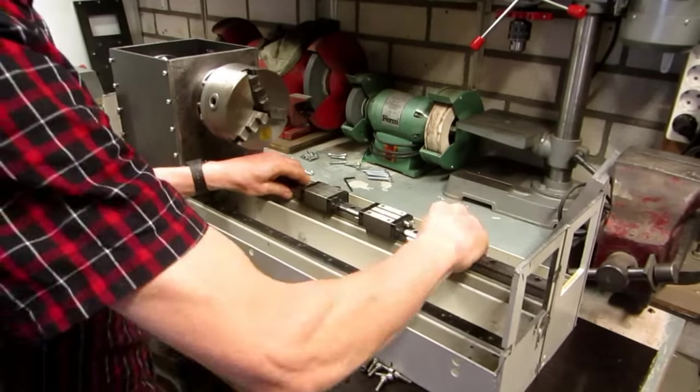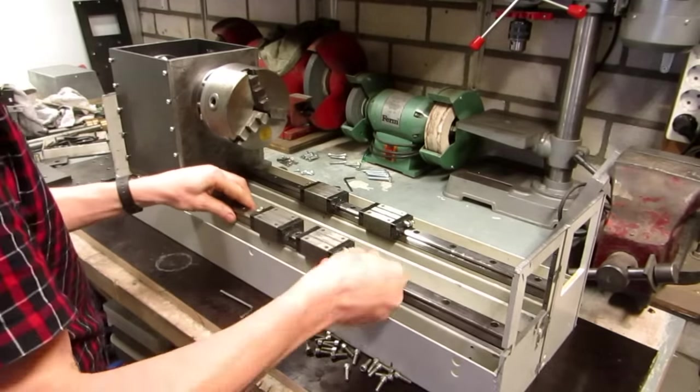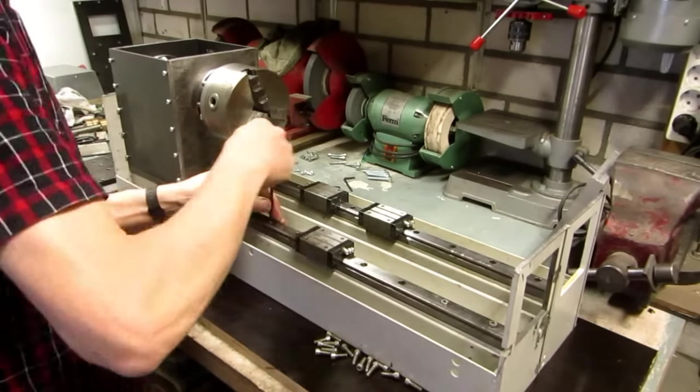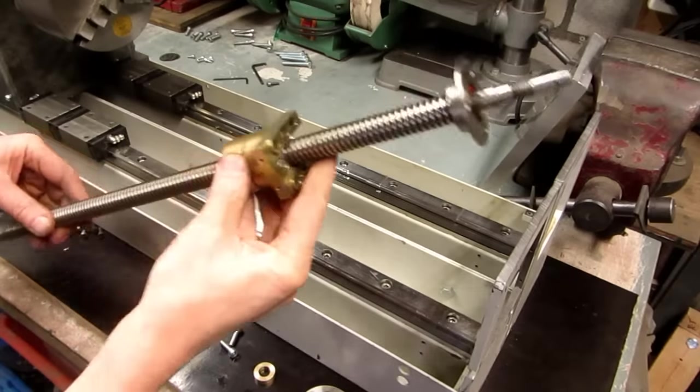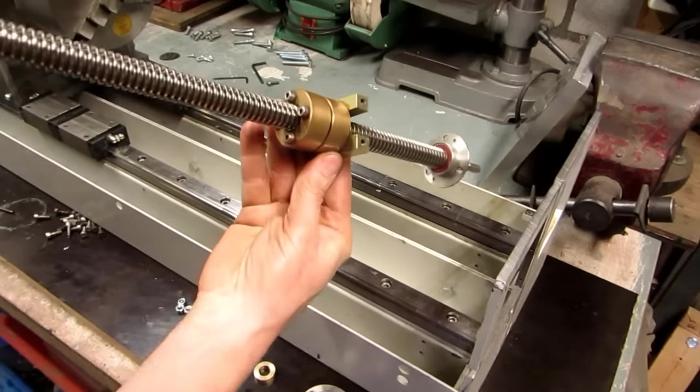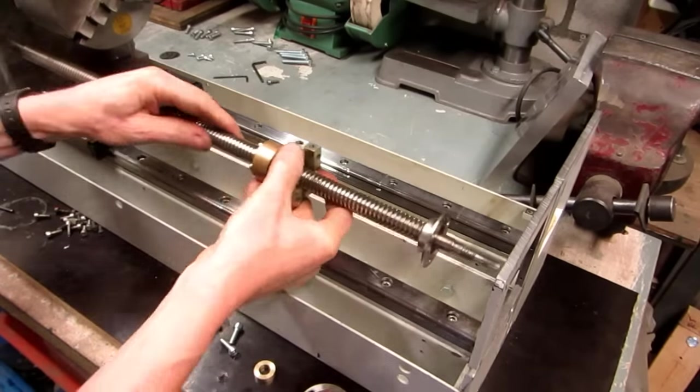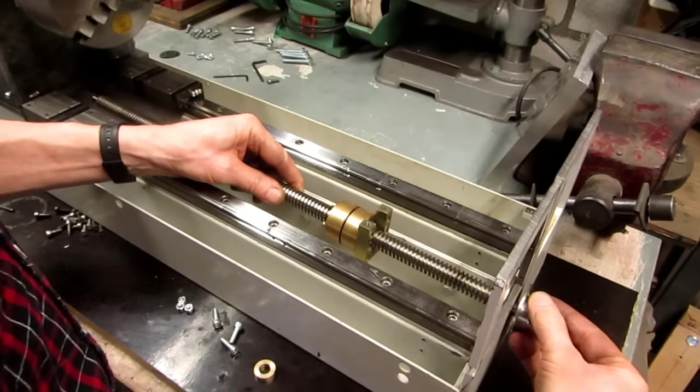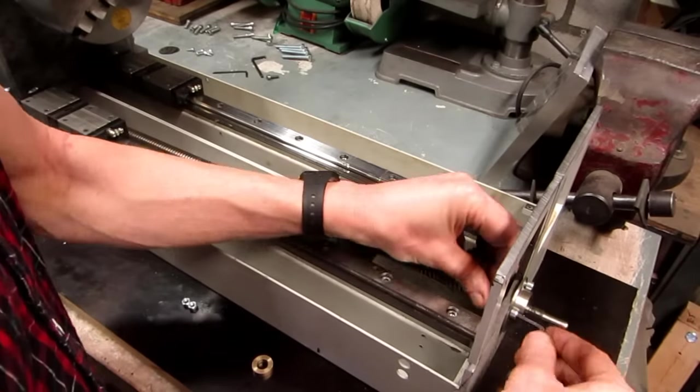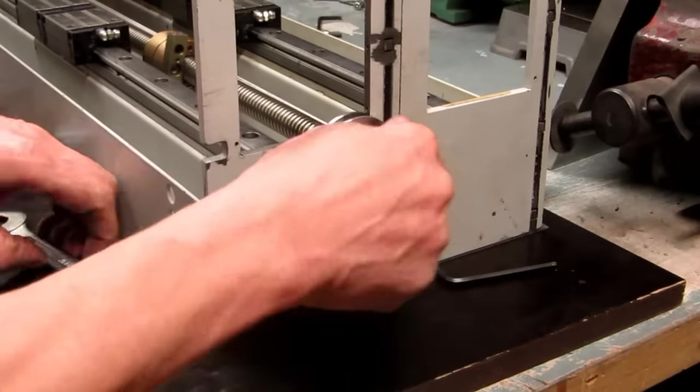Now the 20mm linear guide rails can be mounted. The horizontal lead screw has acme thread with 4mm pitch, and 2 bronze nuts that can be tightened to reduce backlash. It is mounted with 2 bearings to the base rear plate.